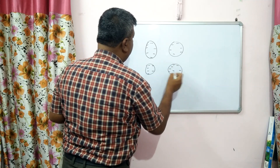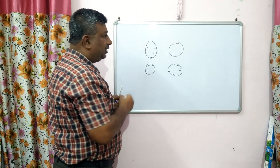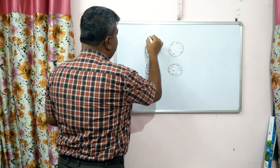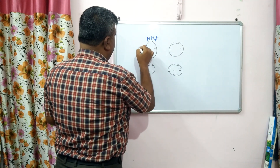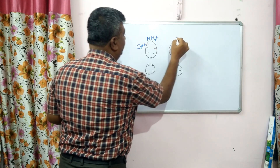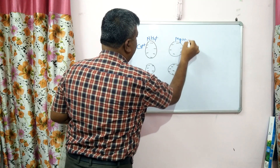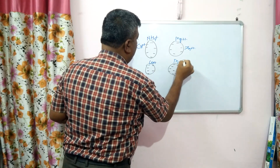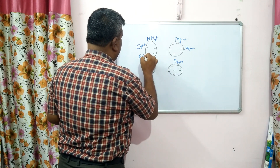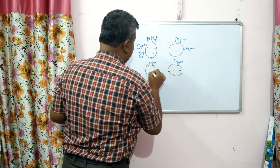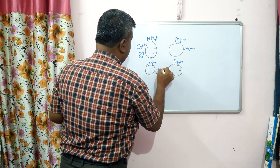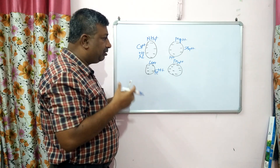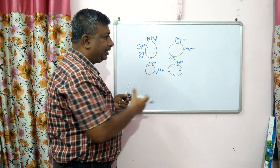Because of this negative charge, soil particles, colloids, and organic matter attract cations like ammonium, calcium, magnesium, zinc, copper, manganese, iron, and hydrogen. There are many cations which are electrostatically held by these clay particles.